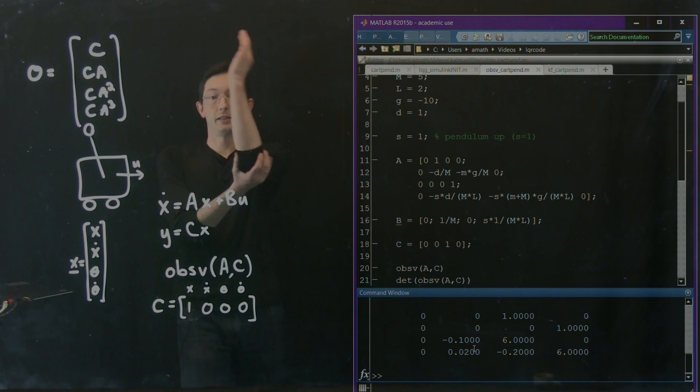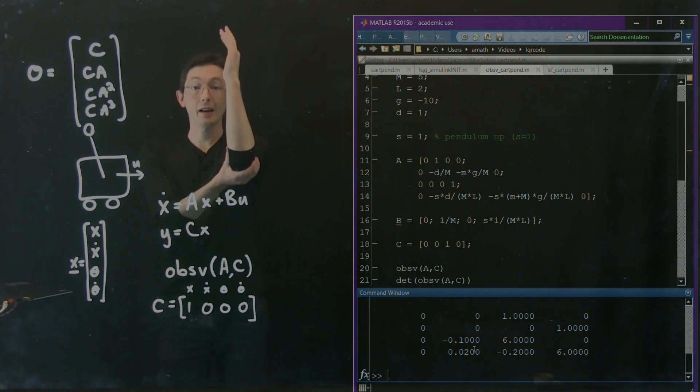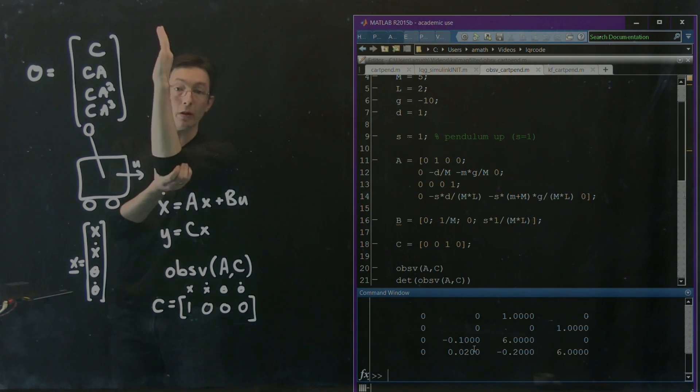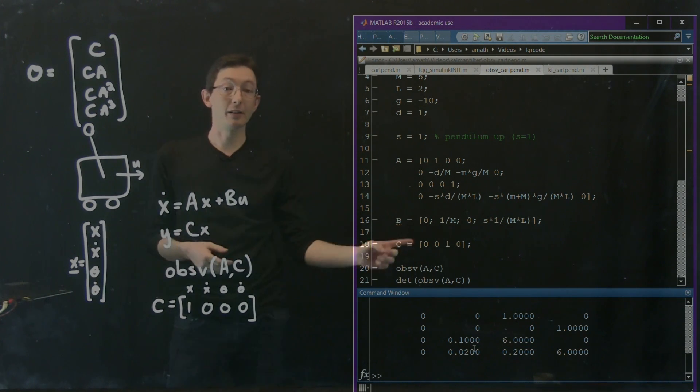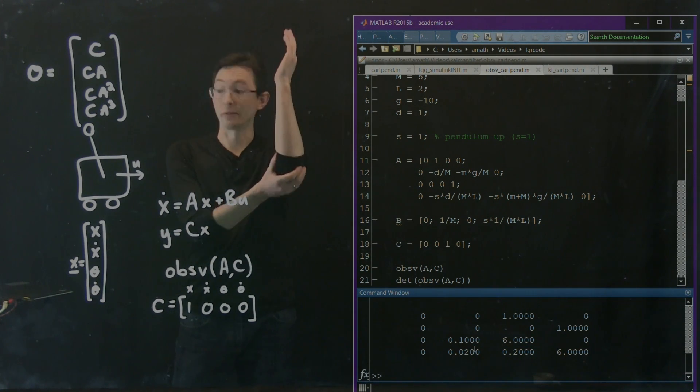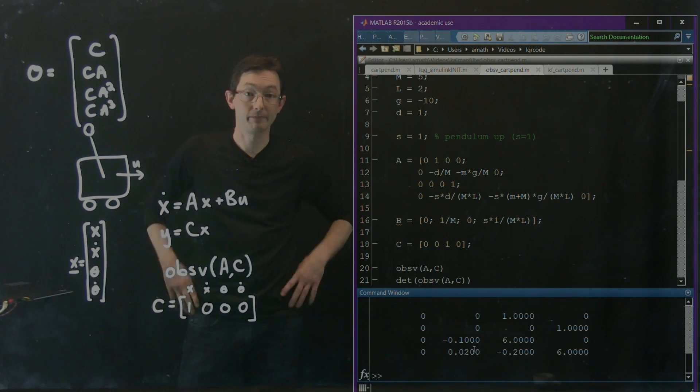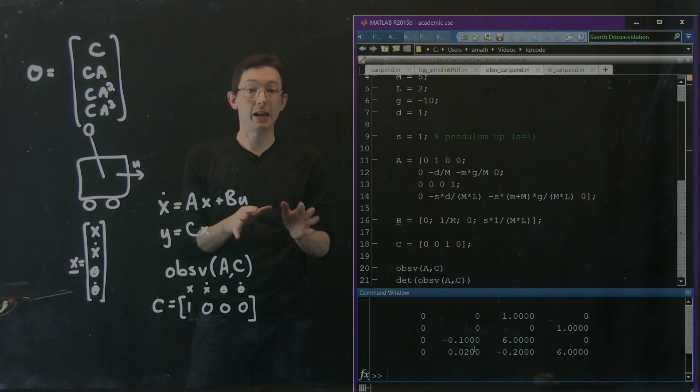So if I really want to stabilize this inverted pendulum on a cart and walk it to exactly some physical position, let's say I want to move it left one meter, then I had better measure the X position because I can't infer it from any of these other measurements.